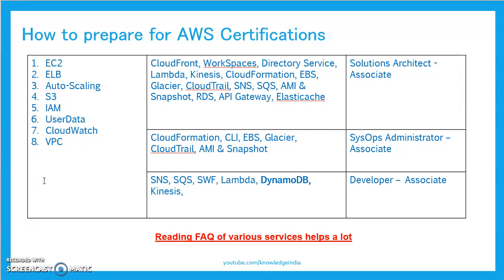On the left-hand side you see services like EC2, ELB (Elastic Load Balancing), Auto Scaling, S3, IAM (Identity and Access Management), User Data, CloudWatch, and VPC. These eight services are very critical and you need to understand them at a deep level — practice them regardless of which associate exam you are going to write. These are the building blocks of AWS and you need to master them for sure.